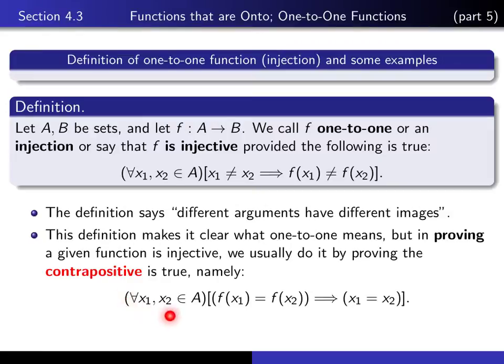So in practice, we'll typically prove that something is one-to-one by looking instead at the contrapositive of this statement. That says, for all X1 and X2 in your domain, if f(X1) is equal to f(X2), then X1 equals X2.